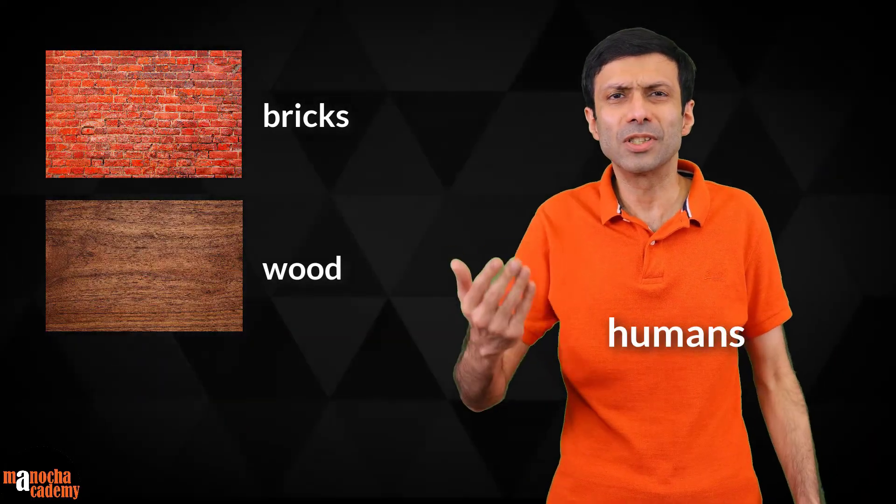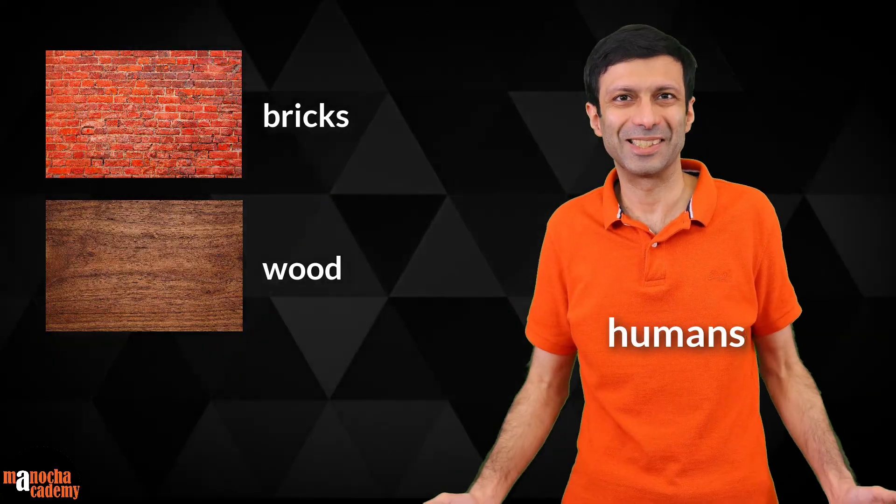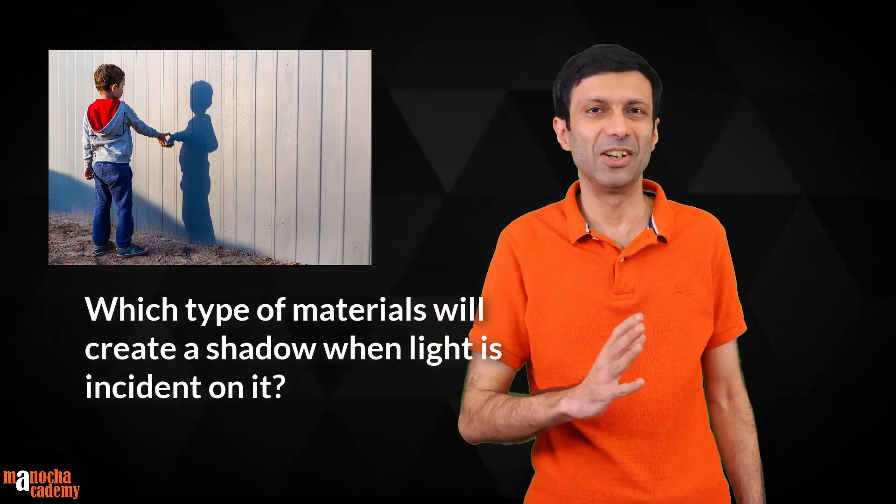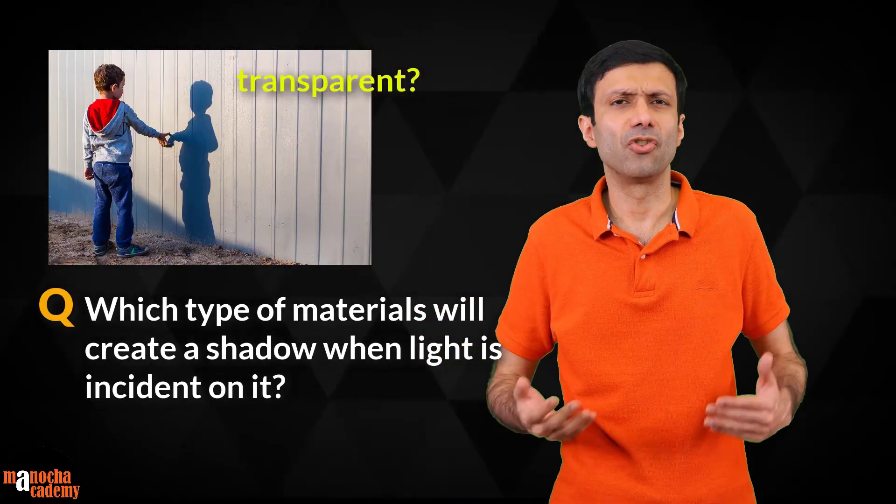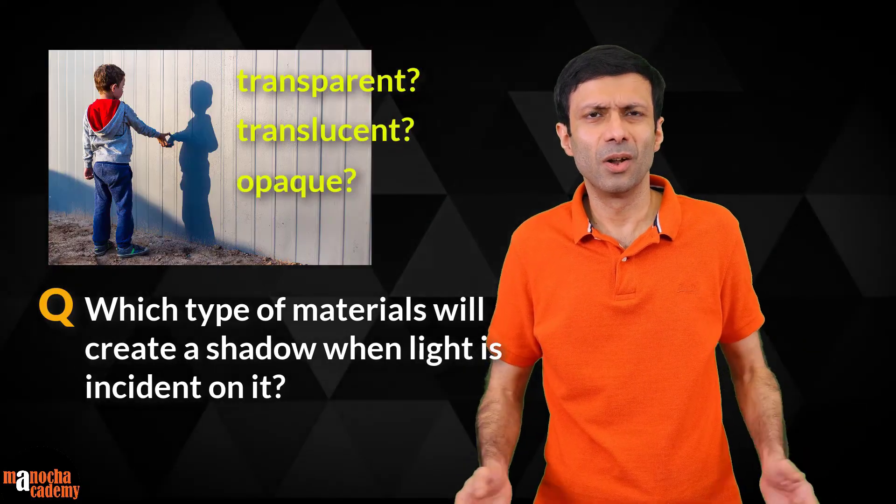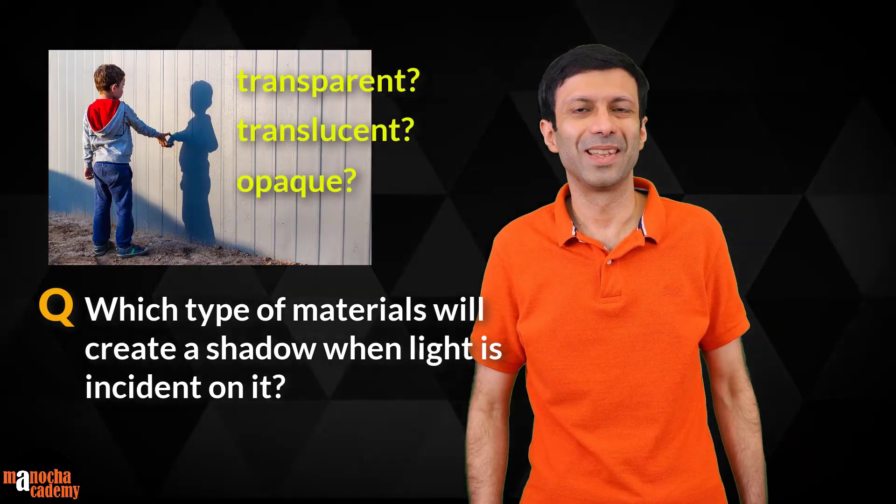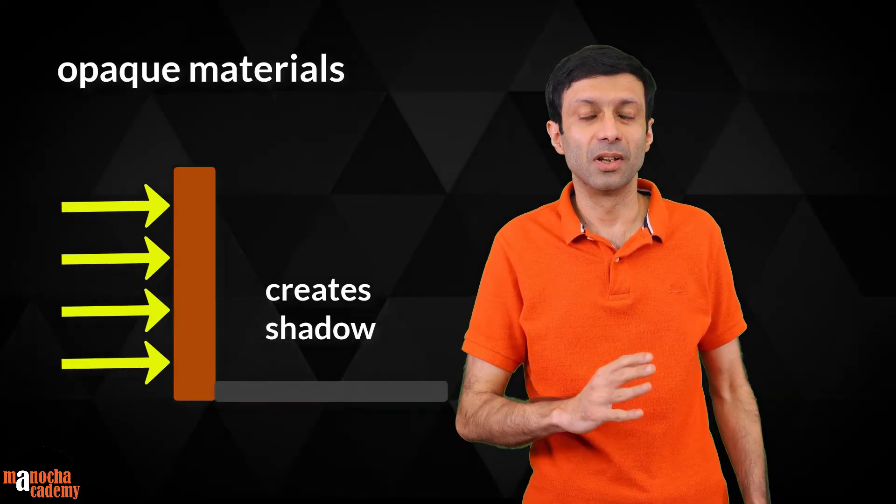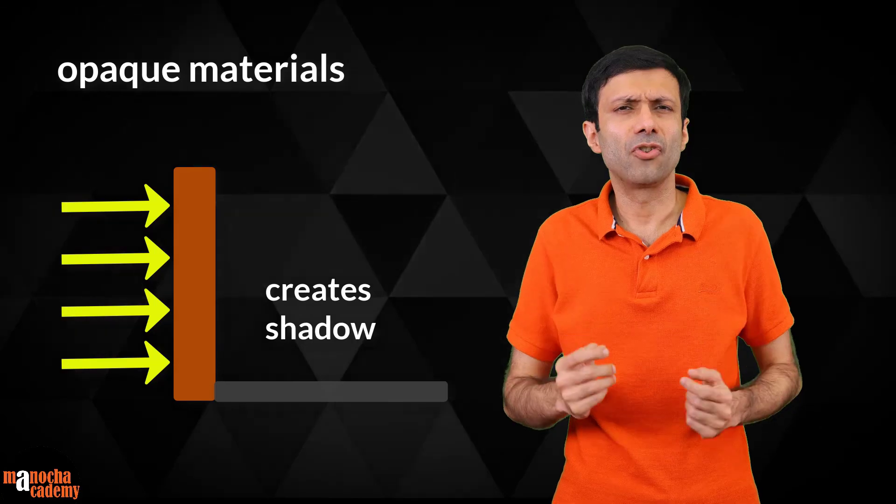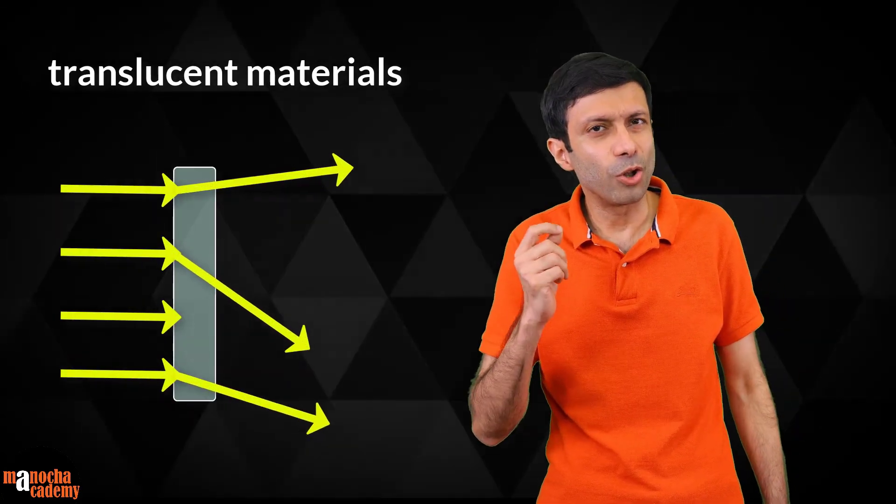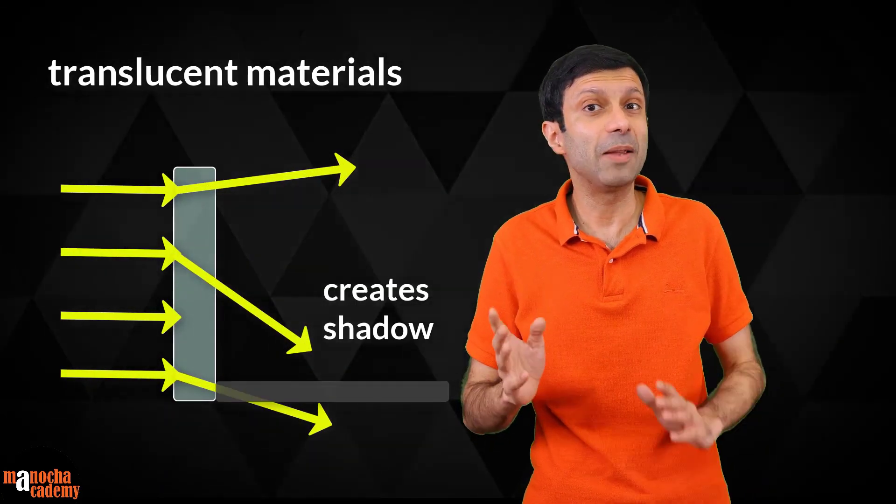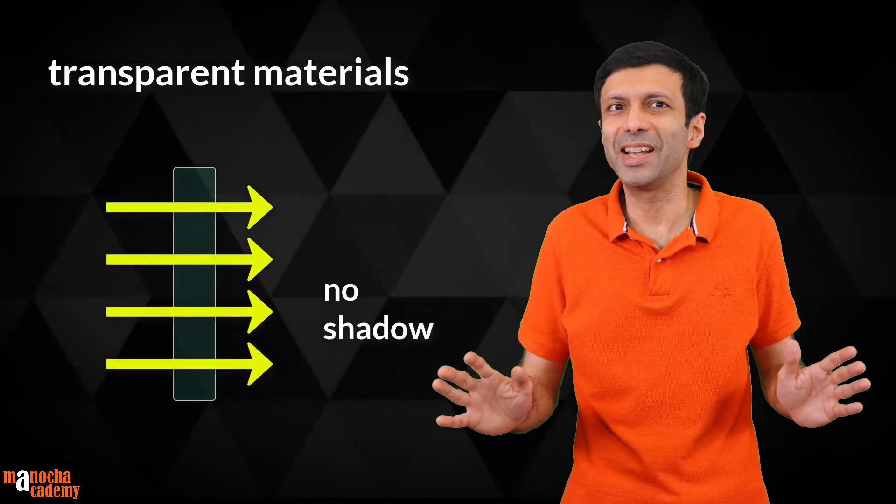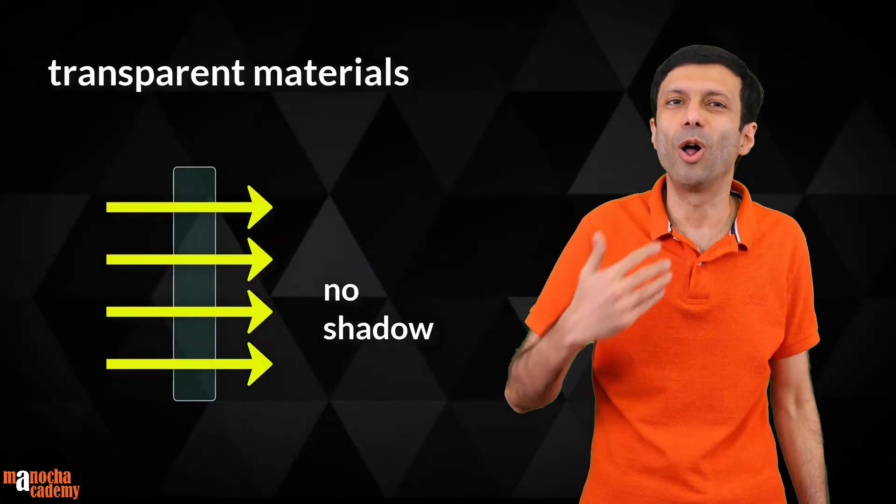Which type of materials will create a shadow when light is incident on it? Is it transparent, translucent, or opaque? What do you think? That's right. Opaque objects will definitely create shadows since they block the light. Translucent materials will also create a shadow since they partially block the light. But transparent materials do not create any shadow because they allow all the light to pass through.